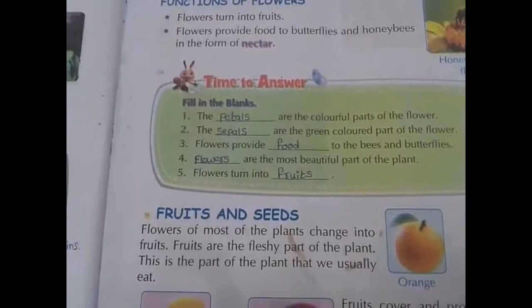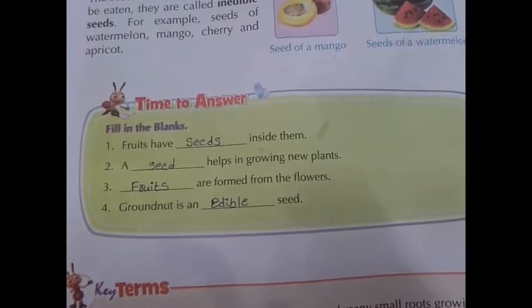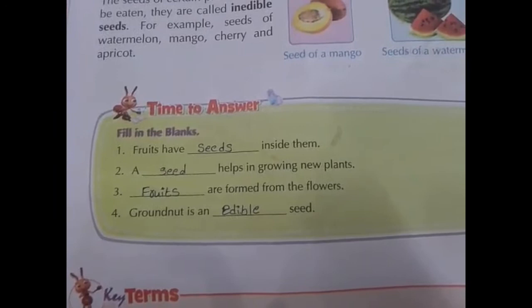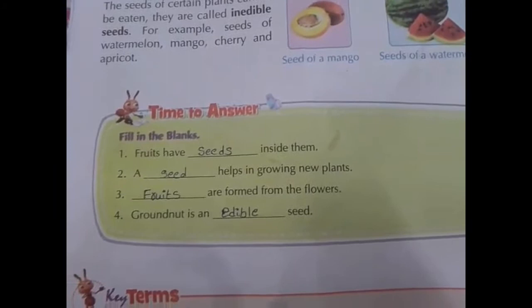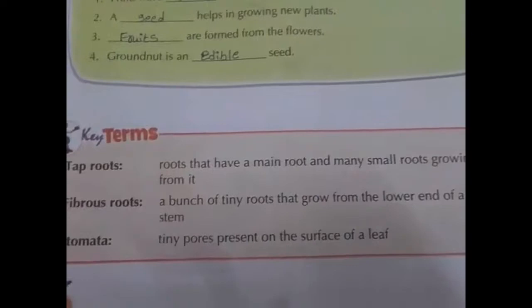Page number 80 blanks: Fruits have seeds inside them. Seeds help in growing new plants. Fruits are formed from the flowers. Groundnut is an edible seed. Some key terms are there — you may read them thoroughly.